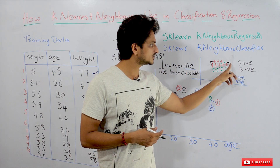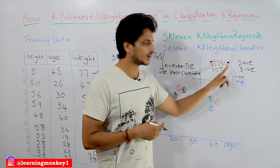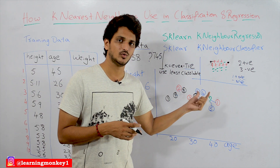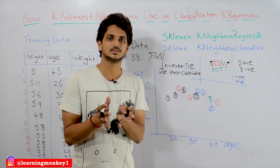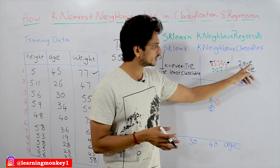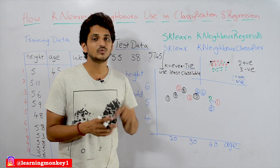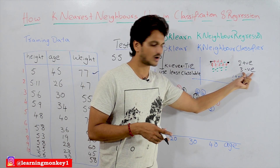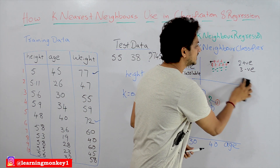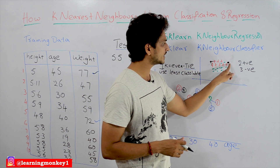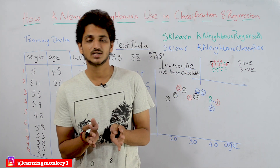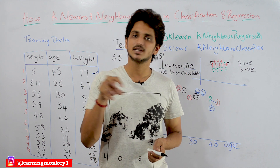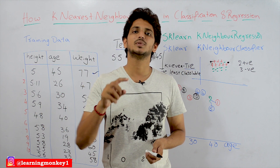Let's take another example testing point with k equal to 5. The model identifies 5 nearest data points: 2 are positive and 3 are negative. The negative class has the majority, so the model predicts this testing data point as a negative data point. In classification, K-Nearest Neighbors picks the k nearest neighbors and selects the majority class as the predicted value.